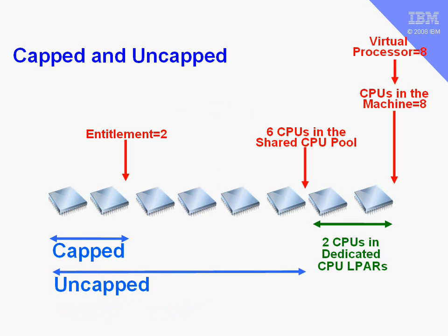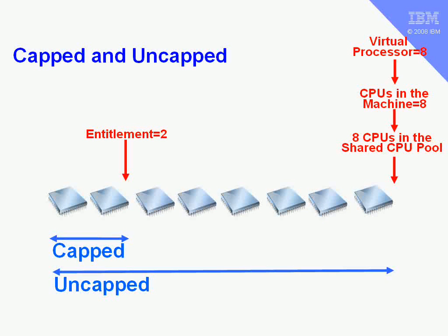If we increase the virtual processor number, our logical partition could now get up to all the CPUs in the pool — guaranteed its entitlement, with the rest depending on what the other CPUs are actually doing. And if we switched off our dedicated CPU partitions, this logical partition, if the virtual processor number is high enough, can use all the CPUs in the actual machine.